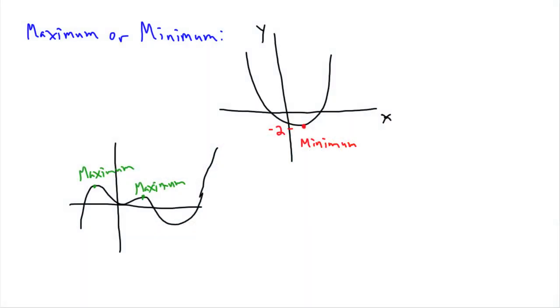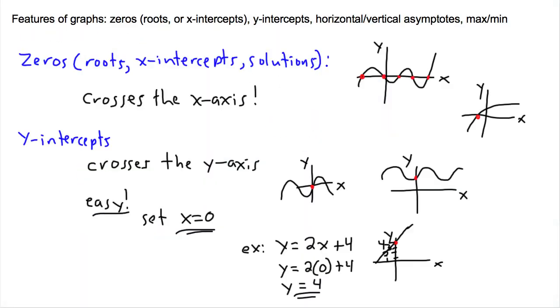In the last video we were talking about features of graphs: zeros, y-intercepts, horizontal and vertical asymptotes, and also maxes and mins.